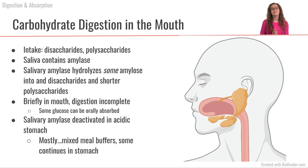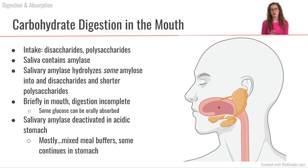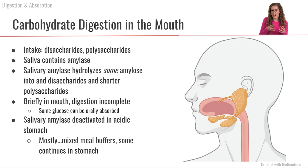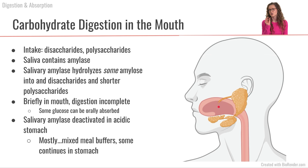Amylase can specifically hydrolyze alpha-1,4 linkages on the terminal ends of the linear amylose. However, food is only very briefly in the mouth, so we don't have complete amylose digestion there. Some of the glucose hydrolyzed off the amylose can be absorbed orally, but not very much. As we swallow and food goes into the stomach, salivary amylase is largely deactivated due to the acidic environment, though some may survive when eating a mixed meal that buffers acidity. The take-home message is that we have a little carbohydrate digestion in the mouth due to salivary amylase, but just a small portion.